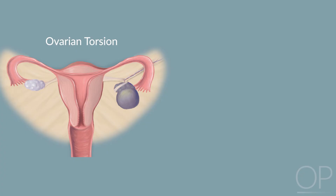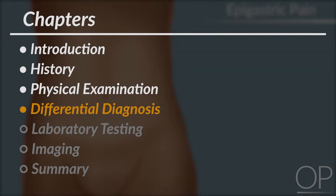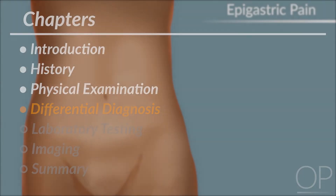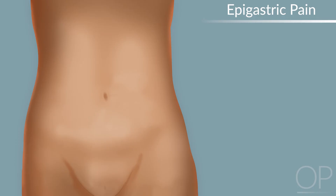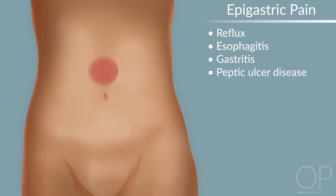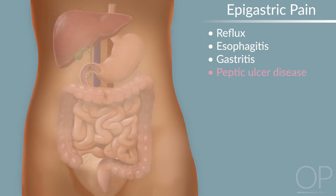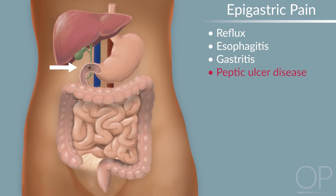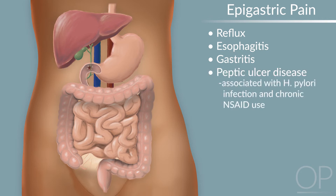In adolescent females, pelvic examination is important for assessing pelvic inflammatory disease, ectopic pregnancy, and ovarian torsion or cysts. The differential diagnosis for epigastric pain includes reflux, esophagitis, gastritis, and peptic ulcer disease, usually involving the stomach or duodenum. Ulcers are relatively unusual in children but more likely to occur with serious illness. As in adults, they are also associated with H. pylori infection and chronic NSAID use.